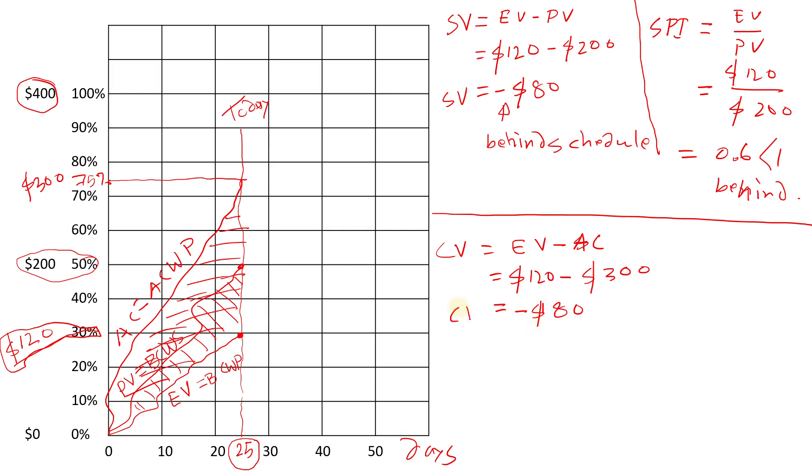That's the cost variance. Again, there is an index, which is sometimes more preferred, called CPI, which is the ratio of these two instead of subtracting them. You simply just do $120, that EV by AC. That's going to be basically 0.4. Again, less than 1 indicates that we spend more. We are over-budgeted. It's not going to be finished at $400. It's going to cost us more.